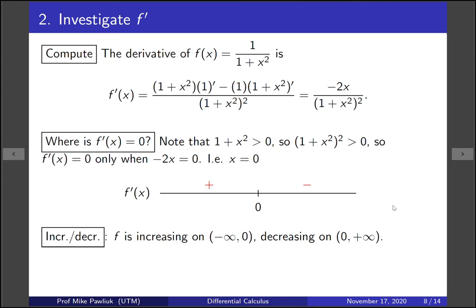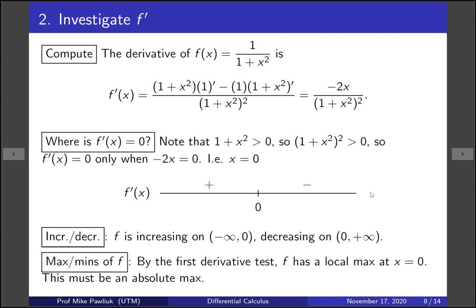From the sign diagram we can extract information about the original function. Since the derivative goes from positive to negative at x equals 0, by the first derivative test, f has a local max at x equals 0. And because our function is always increasing before 0 and always decreasing after, this local max is actually an absolute max.